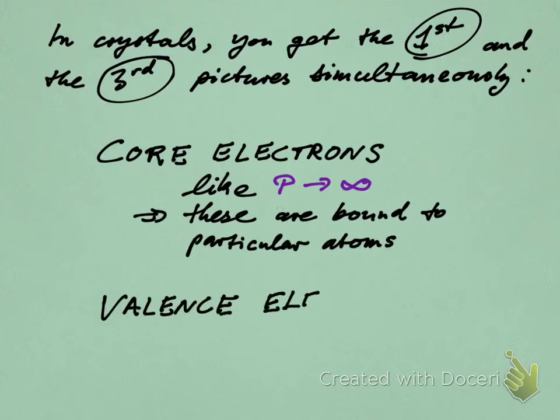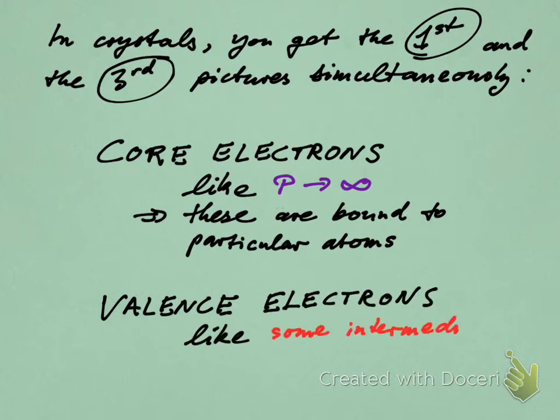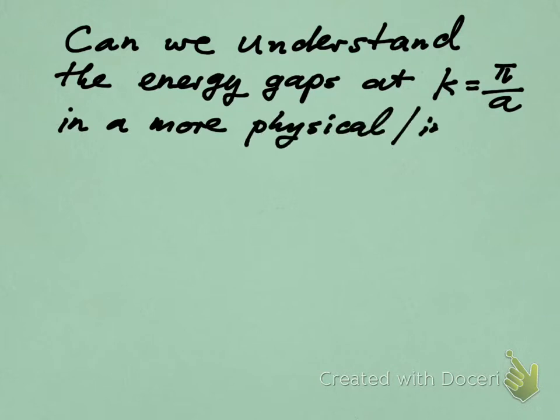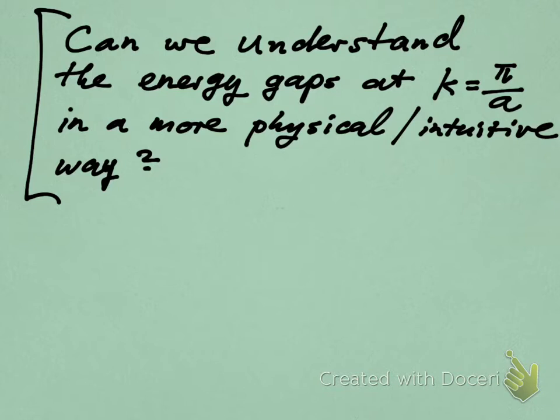And then we also have the valence electrons. Those are the more loosely bound electrons, and they correspond to a picture of some intermediate P value. There is some energy cost to leaving a particular ion that they're near at any given moment, but they would be able to hop over to the next ion. That's the general picture. But for us now, we want to shift gears a little bit and look at these energy gaps from another point of view. Can we find a more physical or intuitive way of understanding why they arise?